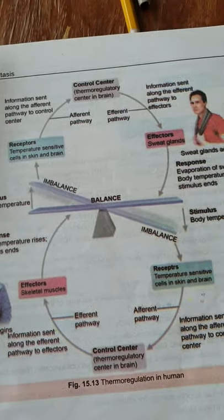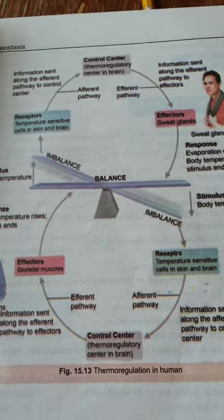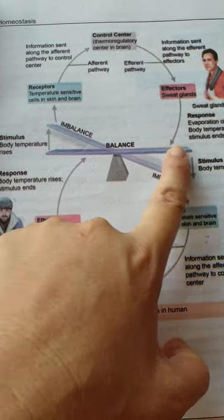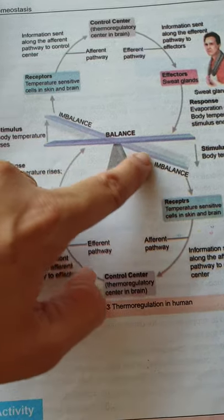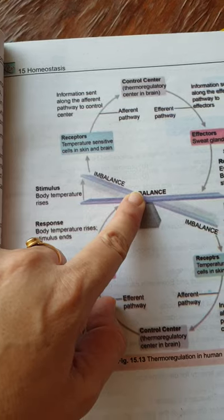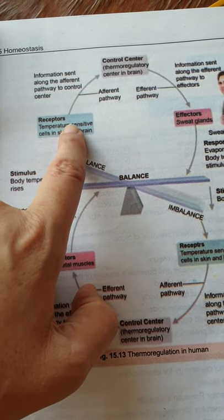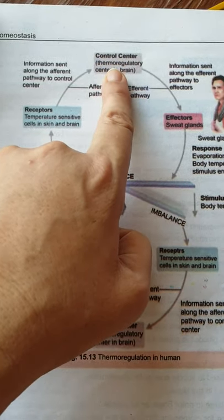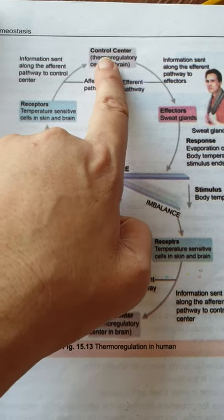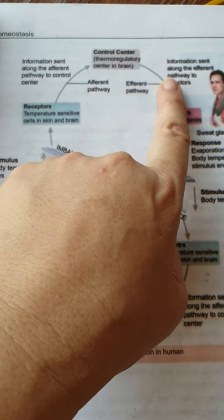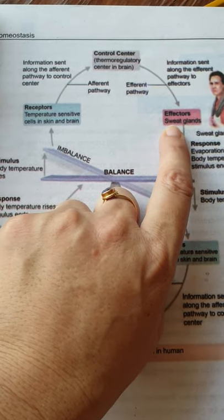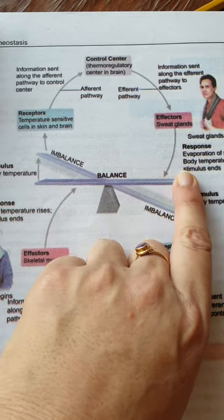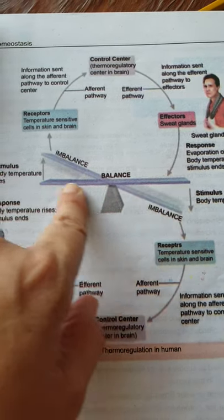This is the picture given in the book in which thermoregulation is explained. You can see that this is the normally balanced form, but when an imbalance occurs in the body — when temperature rises — receptors of the skin and receptors inside the body give a message to the control center, which is the hypothalamus. The hypothalamus then sends a message through the efferent or motor pathway to the effectors. The effectors send a message to the sweat glands, sweating occurs, and the body temperature becomes low or returns to the normal range.